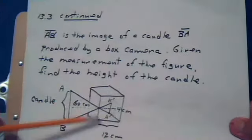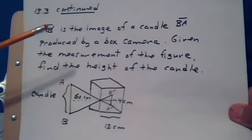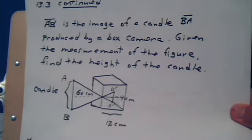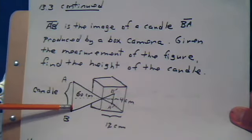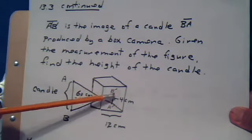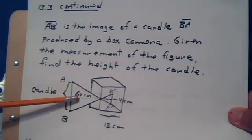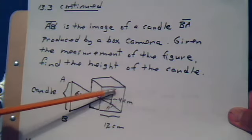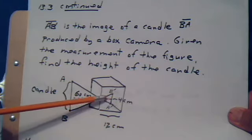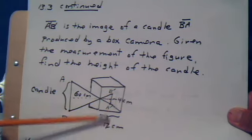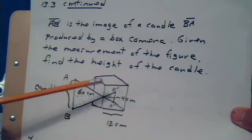Right here we have a box camera. Here's a candle and here's its image inside the camera. Given the measurements of the figure, find the height of the candle. Notice the numbers they gave us: the 60 centimeters, this 4 centimeters, and then this broken line for the little triangle, it's worth 12 centimeters. You have a big triangle and a smaller triangle.